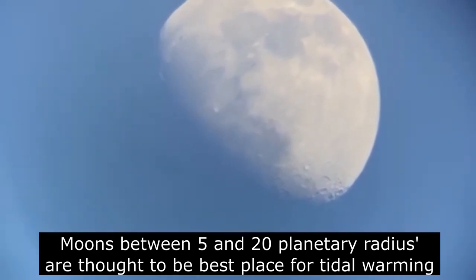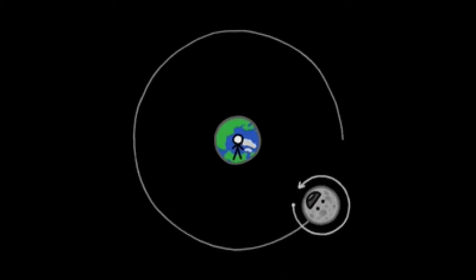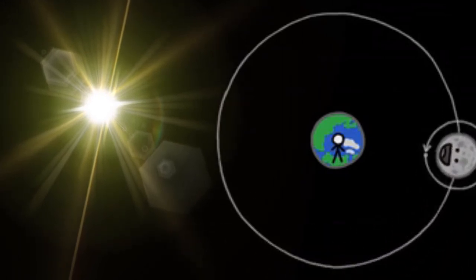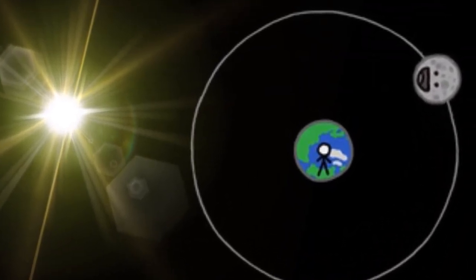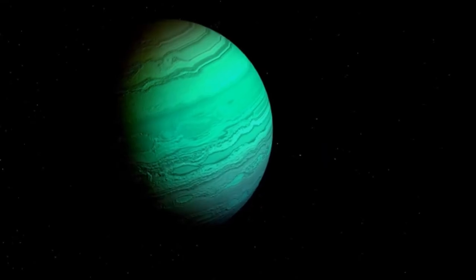Additionally, an exomoon could potentially become tidally locked to its host planet, much like the jovian moons are now. However, since the exomoon's primary is an exoplanet, that means it could continue to rotate relative to its star after becoming tidally locked to the planet, and thus it would still experience a day-night cycle indefinitely.